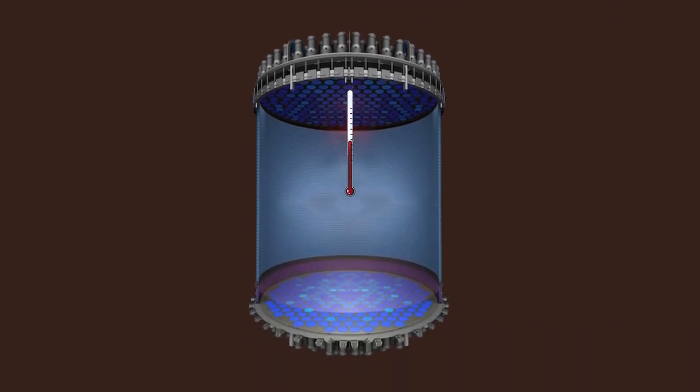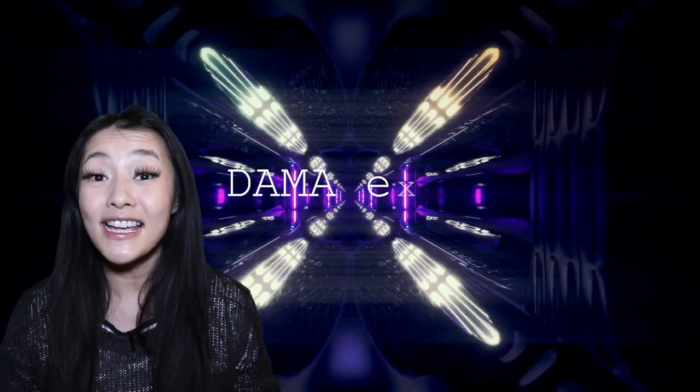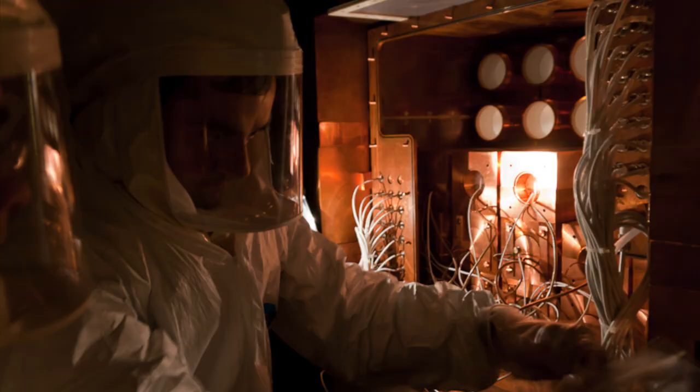There are two main types of these detectors. Cryogenic detectors detect the heat emitted from the recoil. And scintillation detectors detect scintillation, basically flashes of light caused by the collision. The DAMA experiments are scintillation detectors. And so far, they're the only direct detection experiment that have given any positive results at all.